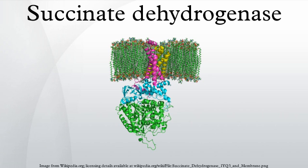In image 3, SDHA is green, SDHB is teal, SDHC is fuchsia, and SDHD is yellow. Around SDHC and SDHD is a phospholipid membrane with the intermembrane space at the top of the image.